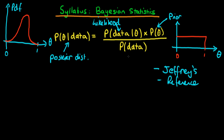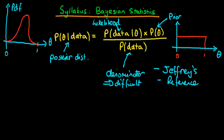The final part of the Bayesian formula is the denominator. It looks perhaps like the most simple term on the right-hand side, when in fact it normally turns out to be the most difficult. Essentially, we need to work out the probability of obtaining that data over all choices of theta, which requires a relatively complicated integral that becomes more and more complicated the higher the number of parameters in our model.